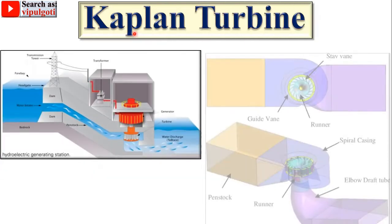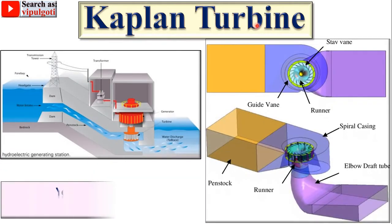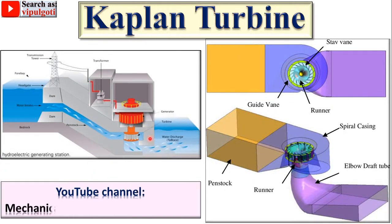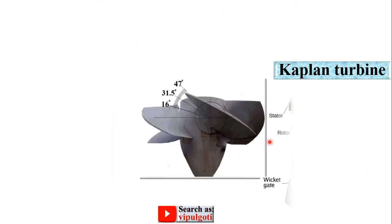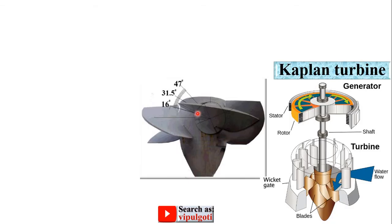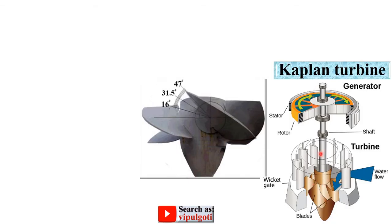Today we are going to discuss the Kaplan turbine. This is a hydropower plant, and here is the turbine — specifically the Kaplan turbine. This one is the runner of the Kaplan turbine, attached with the generator.